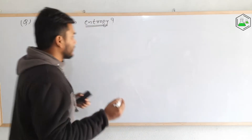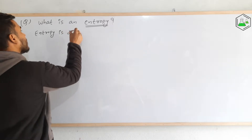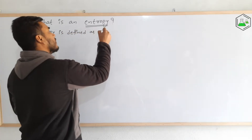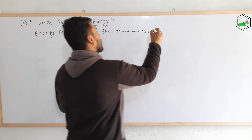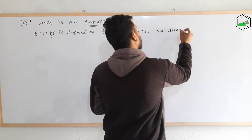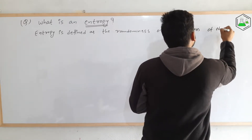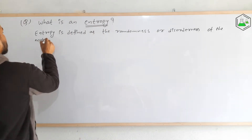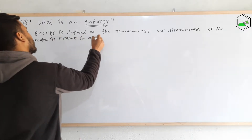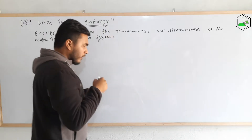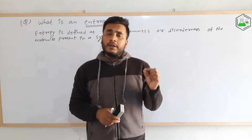Let me write that definition. Entropy is defined as the randomness or disorderness. This is the definition of Entropy — it is just the measurement of that randomness or disorderness of the molecules in a system.